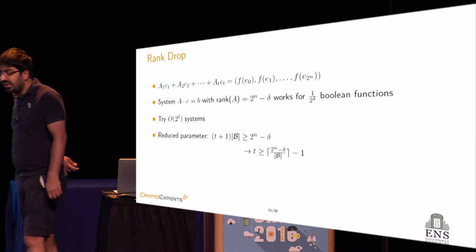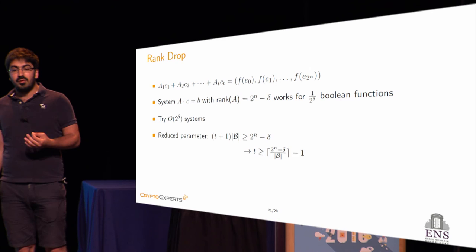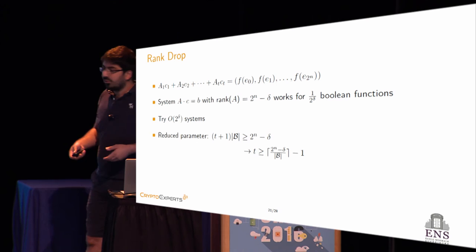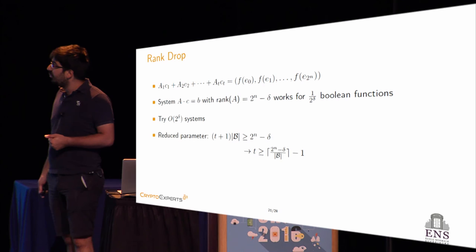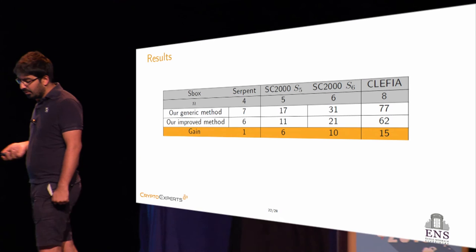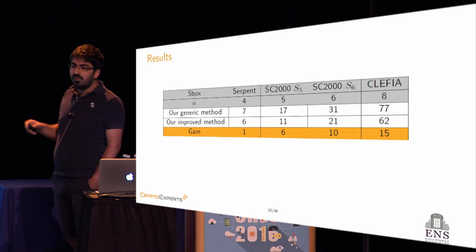The second improvement is called rank drop. It is based on the fact that the linear system, expressed as a matrix product equal to a vector B, does not necessarily require the matrix to be of full rank. Allowing a rank drop of delta means the decomposition works for one Boolean function out of 2^delta, requiring roughly 2^delta systems to be tried. This improvement reduces the condition on parameter T by a factor of 2^(N−delta). Combining these two improvements and applying them to specific S-boxes — Serpent for N=4, SC2000 for N=5 and N=6, and Clefia for N=8 — we achieved gains of up to 15 in multiplicative complexity over the generic method.